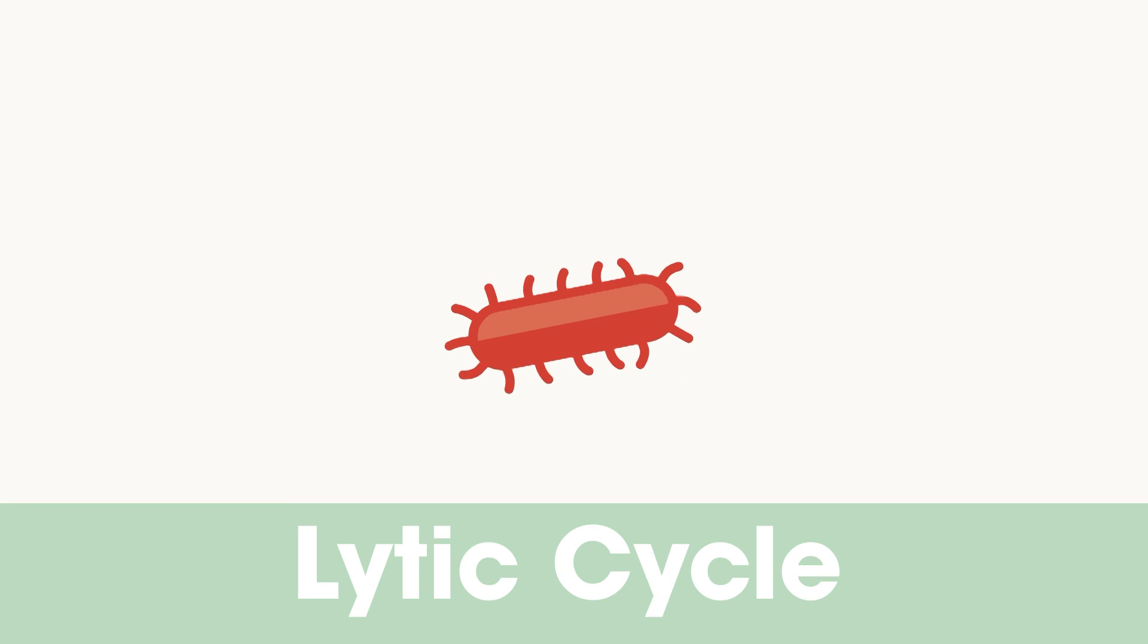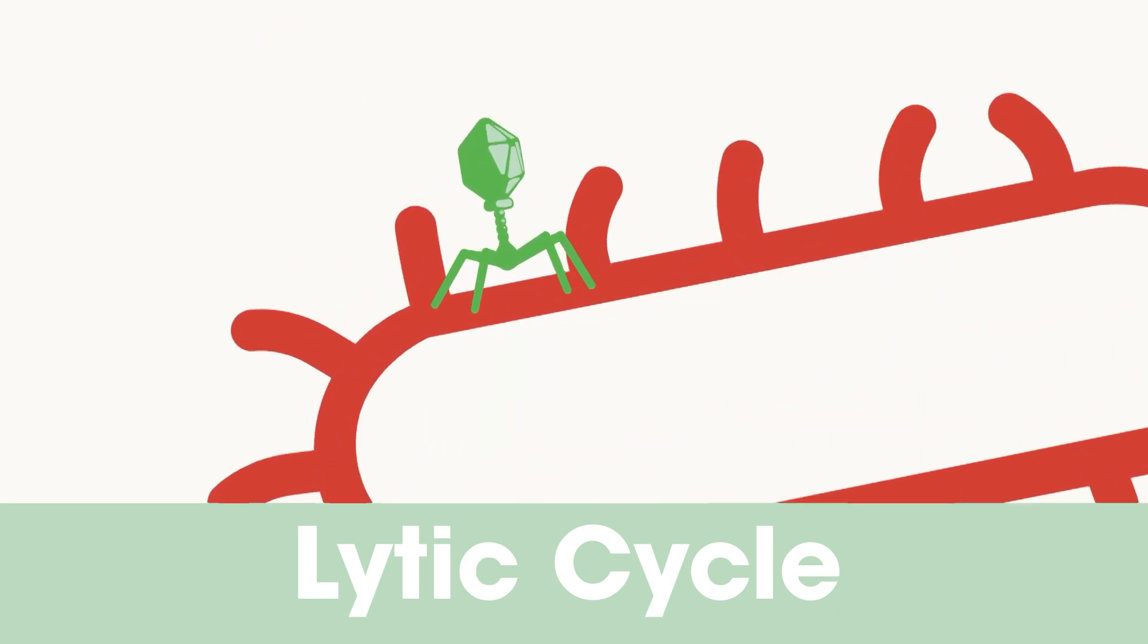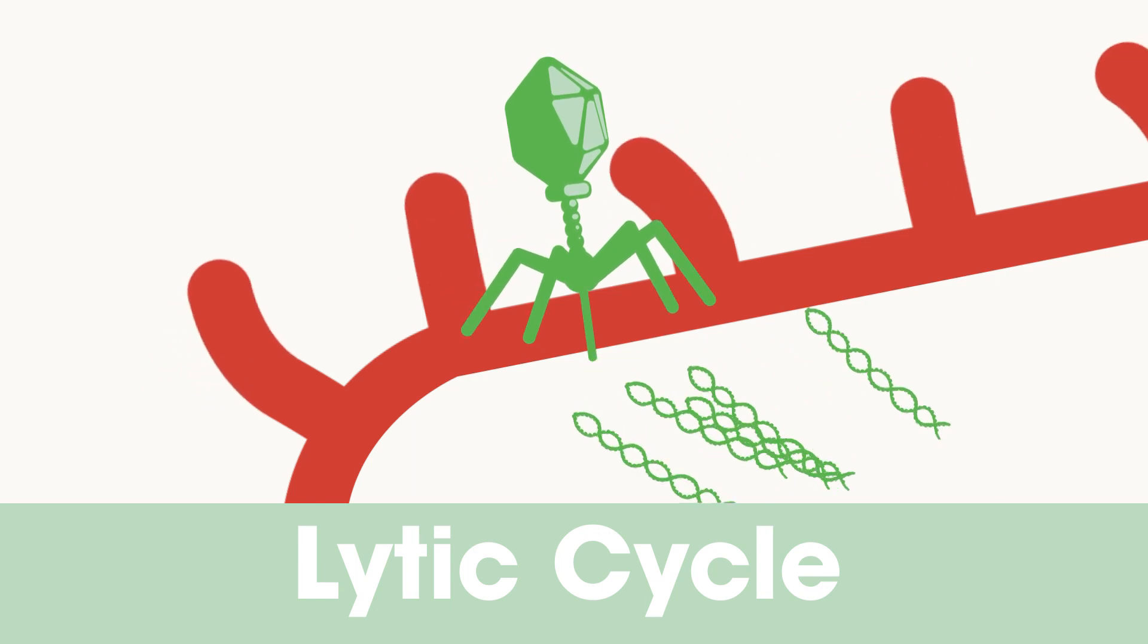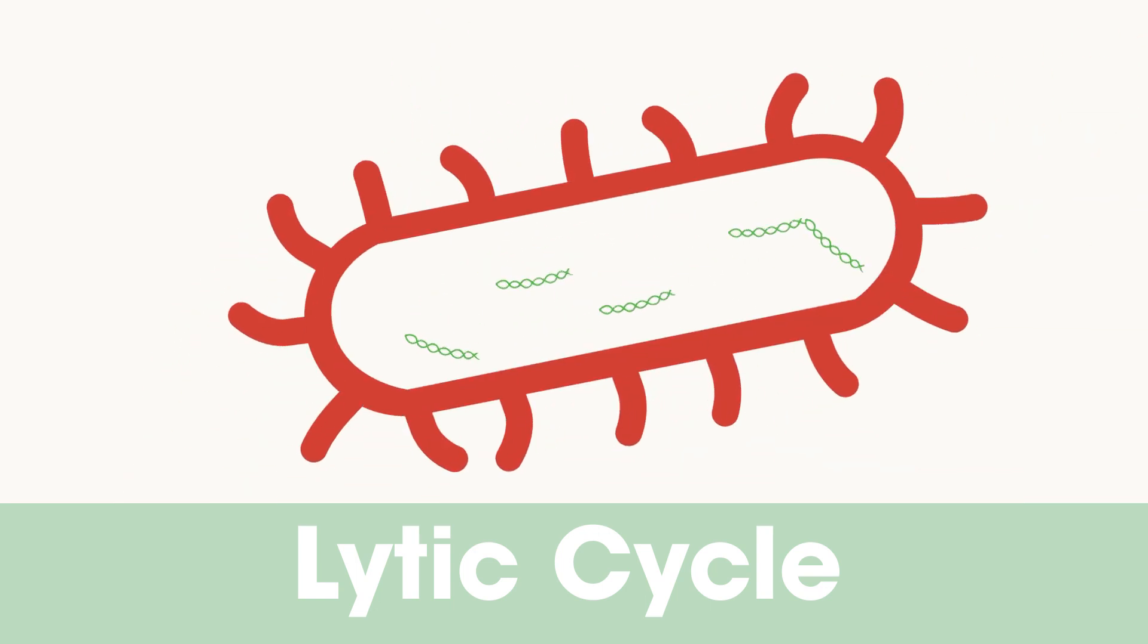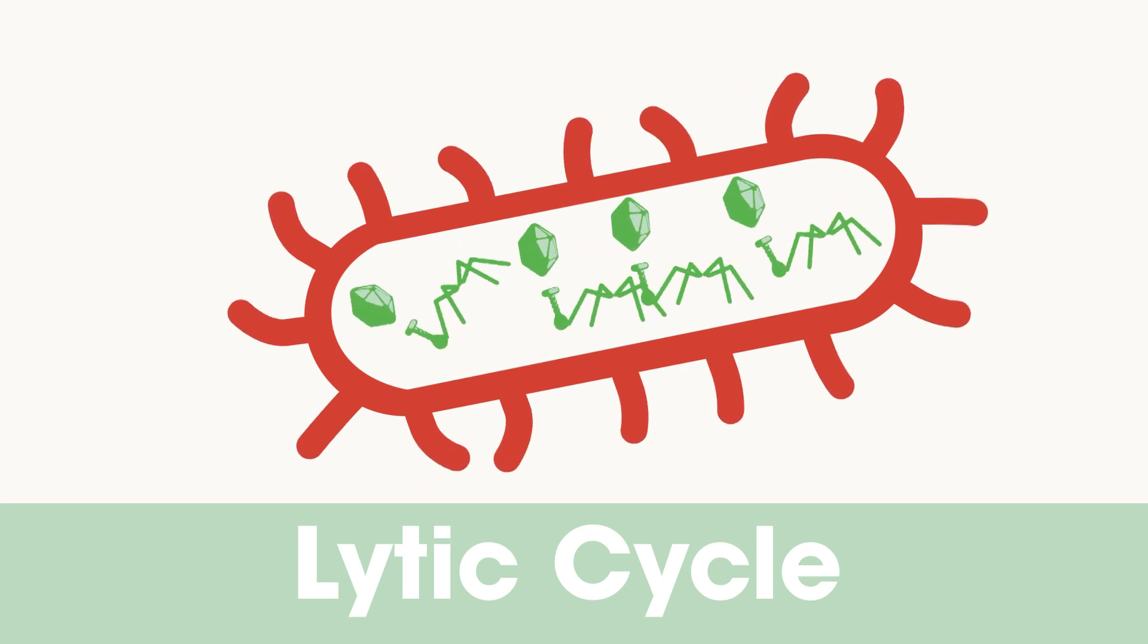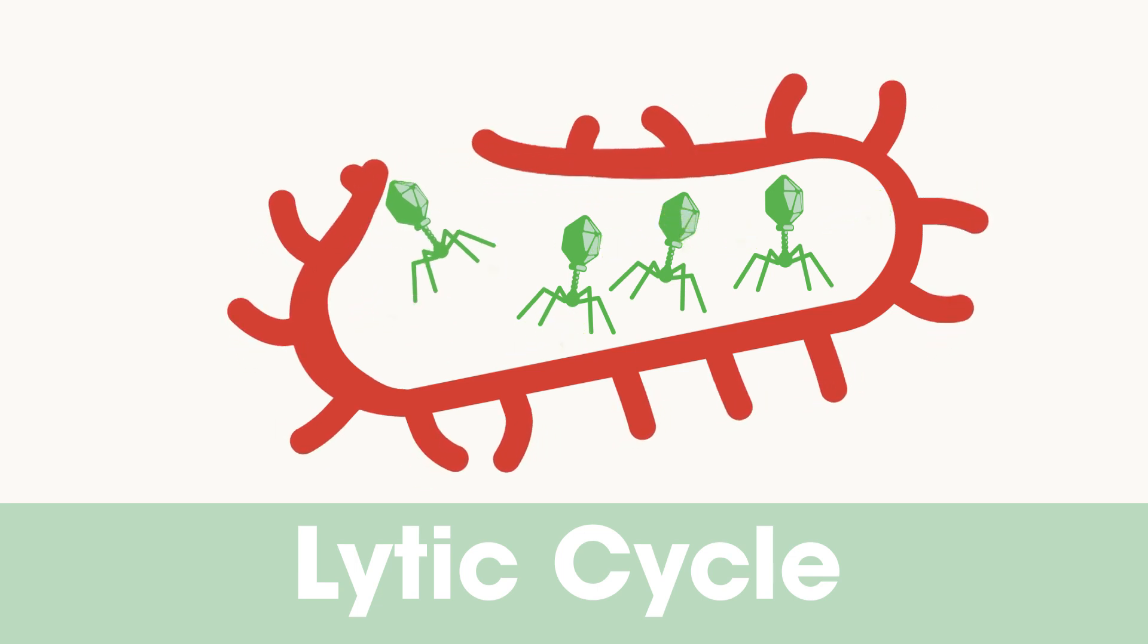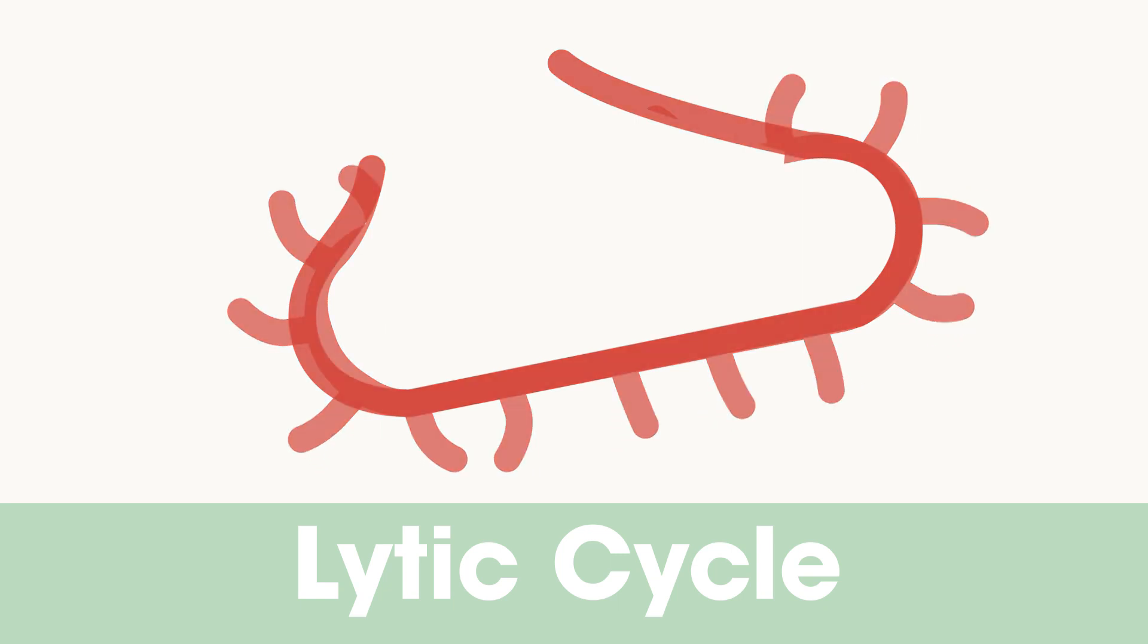Phages specifically recognize and attach to target bacteria. Then, they inject the genetic material and take control of the bacteria, which starts producing phage components. Rapidly, all new phages are assembled, and they produce an enzyme leading to bacteria lysis and the release of the new phages capable of repeating this lytic cycle again.